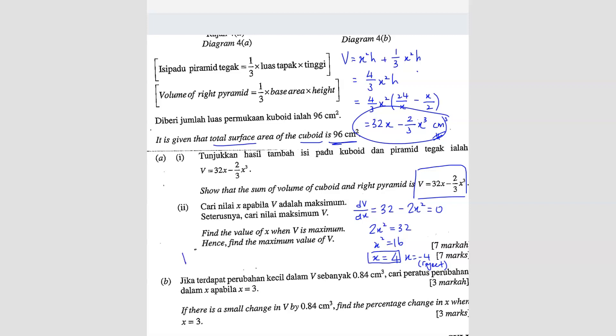You just substitute back to find the maximum volume. So 32 times 4 minus 2/3 times 4³. So you should get your answer 256/3 cm³. This is your maximum volume. You can also write in decimal. Up to you. So this is the answer.